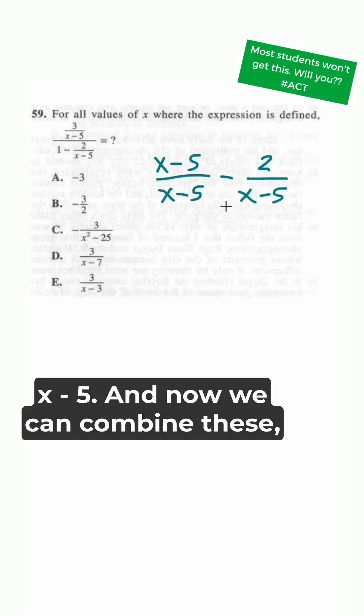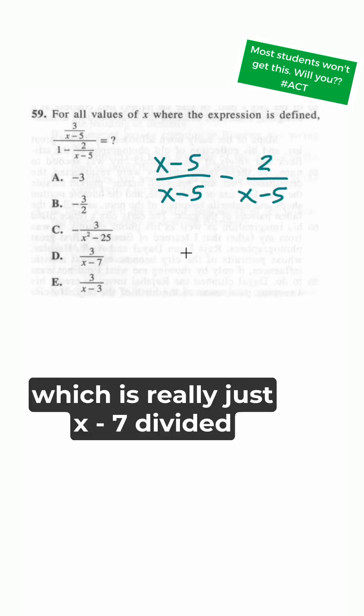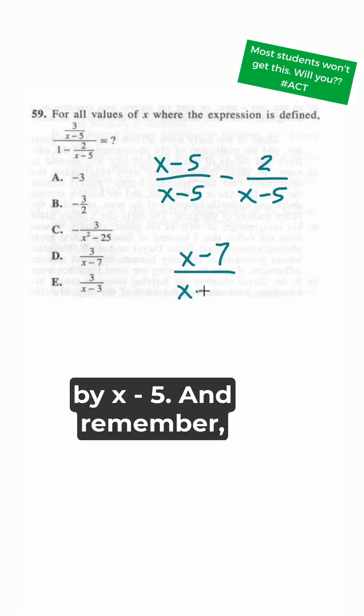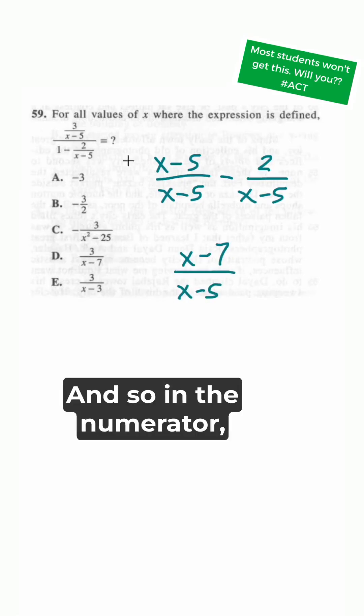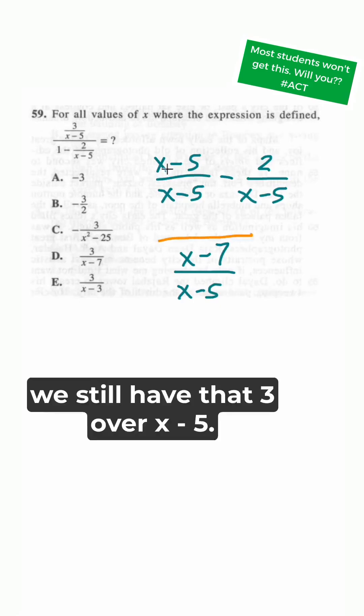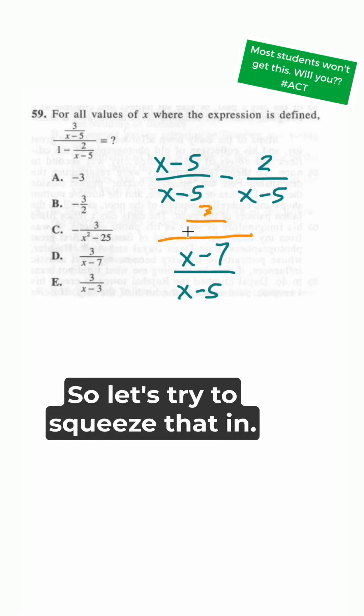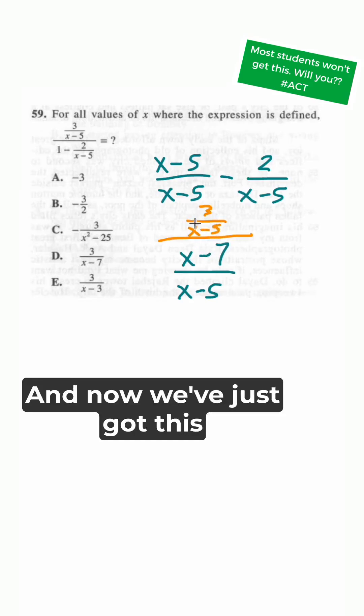Now we can combine these. We get x minus 5 minus 2, which is really just x minus 7 divided by x minus 5. Remember that was the original denominator, and so in the numerator we still have that 3 over x minus 5. So let's try to squeeze that in.